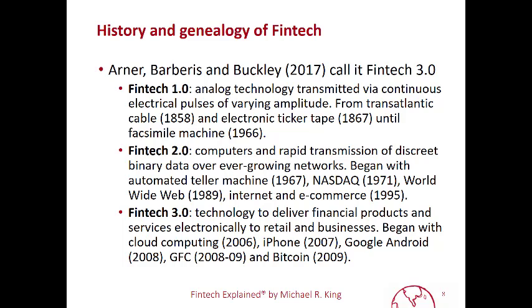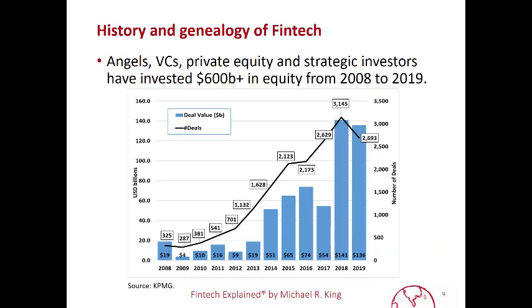FinTech 3.0 was really about the delivery of financial products and services to retail and small businesses. It became possible because of the decline in cost of computing, with the rise of cloud computing power, as well as the widespread availability of smartphones — the iPhone and Google Android — and the destruction of trust in the traditional financial system caused by the global financial crisis. This rise in FinTech was accompanied by massive investments in the equity of startups from angel investors, venture capitalists, and private equity, as well as later strategic investments by financial incumbents in startup companies. KPMG estimates that over $600 billion US has been invested in the equity of startups.